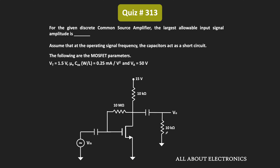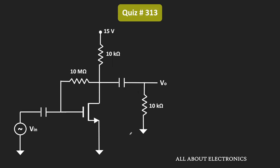For the given MOSFET amplifier, we have already been given some MOSFET parameters, and at the operating signal frequency this capacitor acts as a short circuit. To find the maximum allowable input signal, first we need to find the voltage gain. Using the small signal analysis we can find the voltage gain, but to draw the small signal model we first need the value of the transconductance, which can be found using DC analysis.